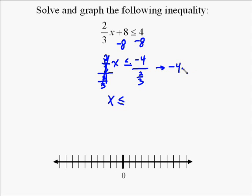We do this by taking the reciprocal of 2 thirds and changing it to multiplication instead of division. Negative 4 times 3 is negative 12. 1, which is the denominator in negative 4, times 2 is 2, so you have negative 12 over 2, which is equal to negative 6.